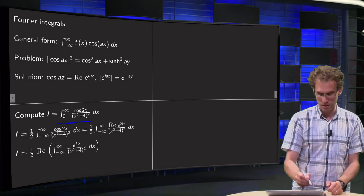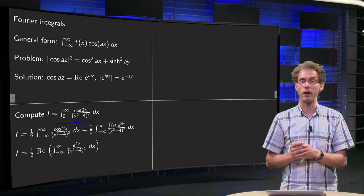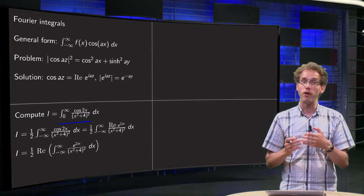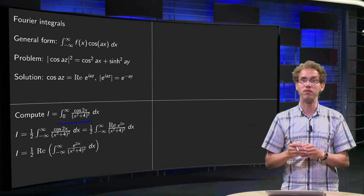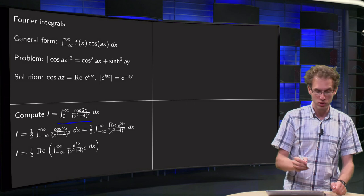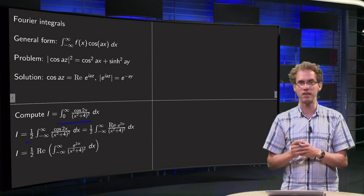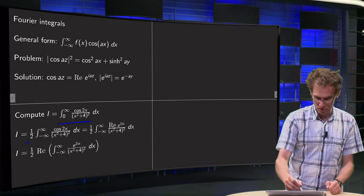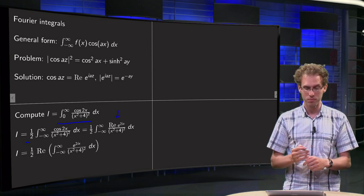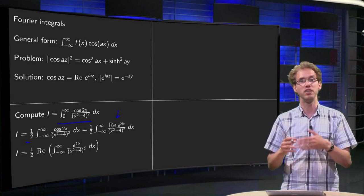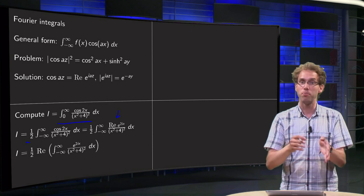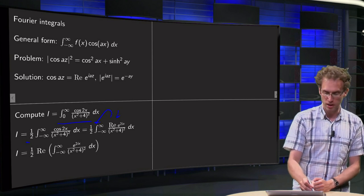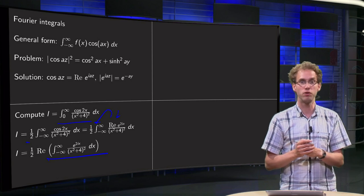Let's do an example: the integral I from 0 to infinity of cosine(2x) over (x² + 4)² dx. Finding antiderivatives is horrible here. First, we want to integrate from minus infinity to infinity — it's possible because we have an even function, so our integral equals one-half times the integral from minus infinity to infinity. Then we get rid of the cosine: cosine(2x) equals the real part of e^(2ix), and we can take the real part outside the integral.